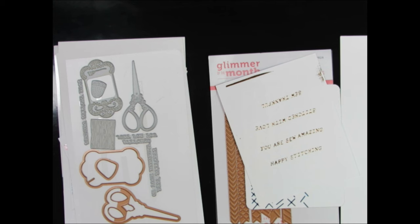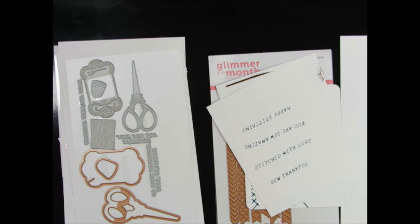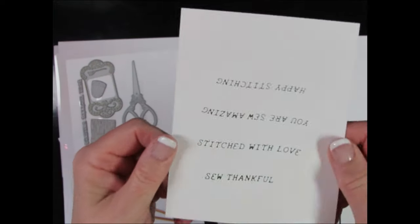This Glimmer also comes with four sentiments, and those sentiments are Stitched With Love, You Are So Amazing, Happy Stitching, and So Thankful, as well as a banner die to cut a die that's shaped like a banner that you can use then to die-cut these sentiments. So off camera I just went ahead and foiled those in different colors—silver, gold, and the Cobalt blue.